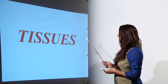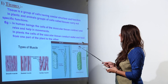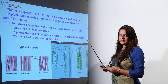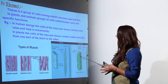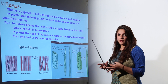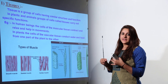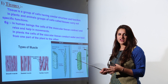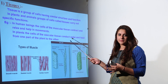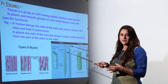Moving on to our next chapter which is tissues. Tissues are a group of cells which have a similar structure and a similar function. These groups of cells tend to collaborate together and perform a specific function in plants as well as animals.